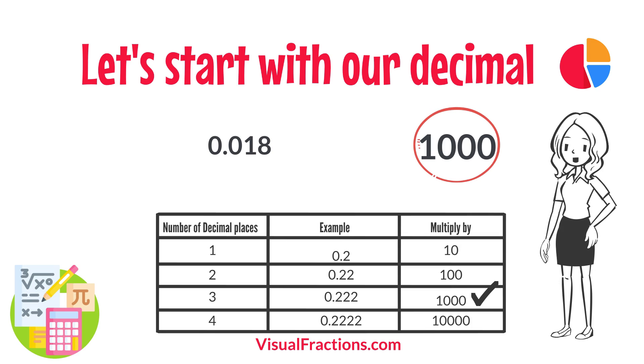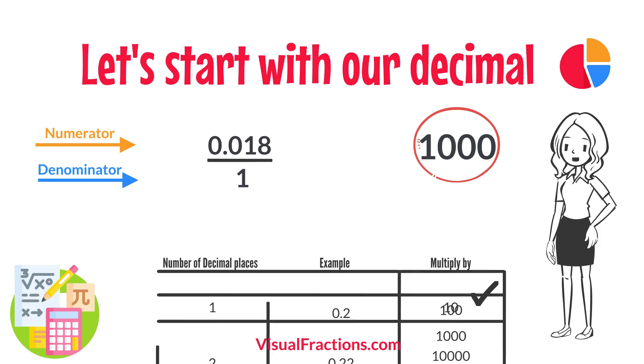To convert this decimal into a fraction, you initially put 0.018 over 1, essentially treating the decimal as the numerator in a fraction where the denominator is 1.